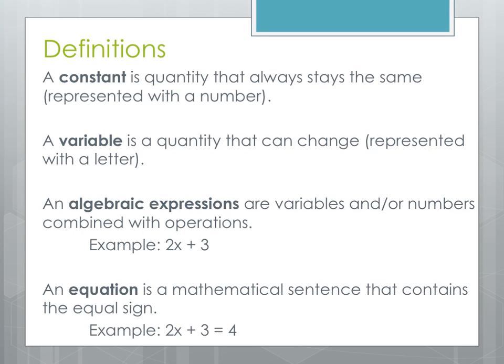Let's start with some definitions. A constant term is a quantity that always stays the same, so we usually represent that with a number. It could be something like 4, or 100, or 1/2. Those are all considered constants because their values never change.